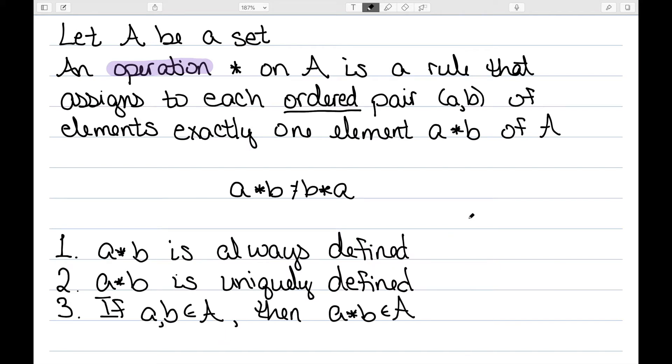Finally, if a and b are in my set A, then a star b must be in my set A, so I cannot leave my set. A good example, subtraction is not an operation on the positive numbers, since two minus three would be negative one, which would be no longer a positive number. So it must always be defined and it must still be in the set.